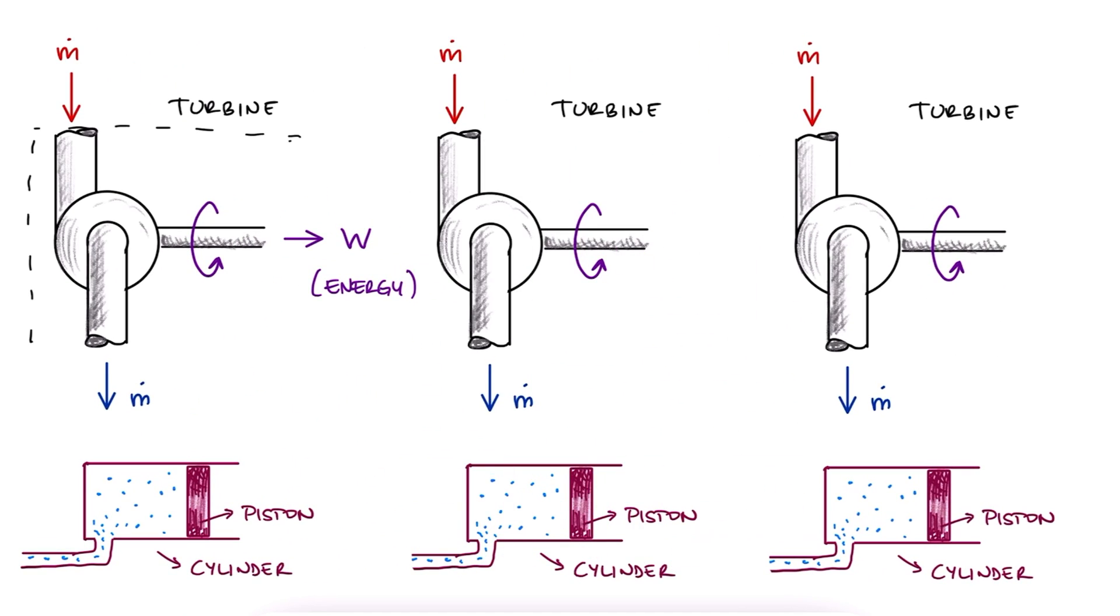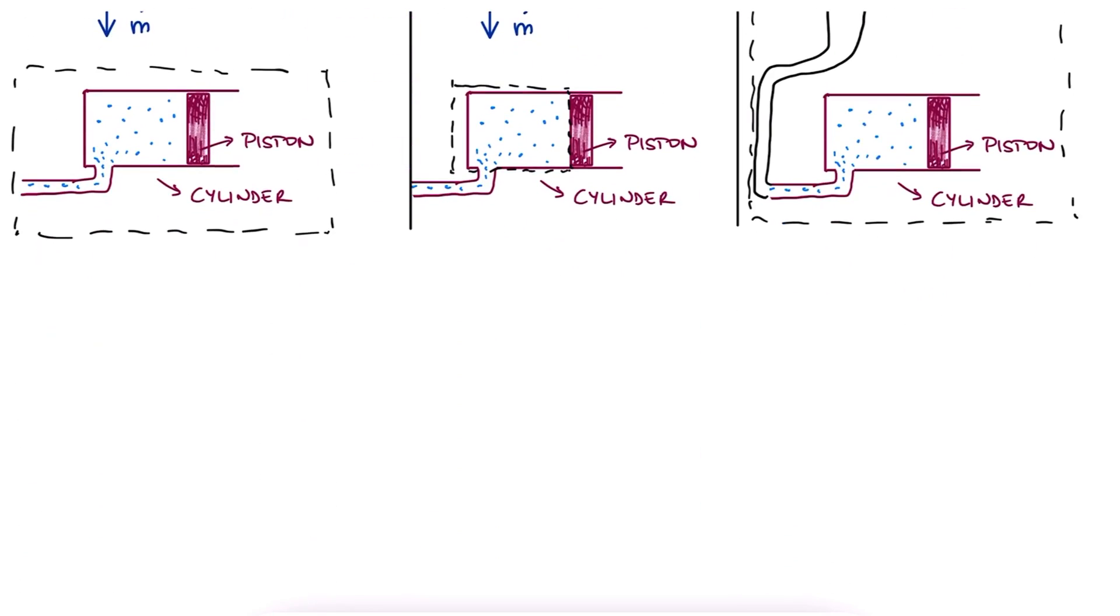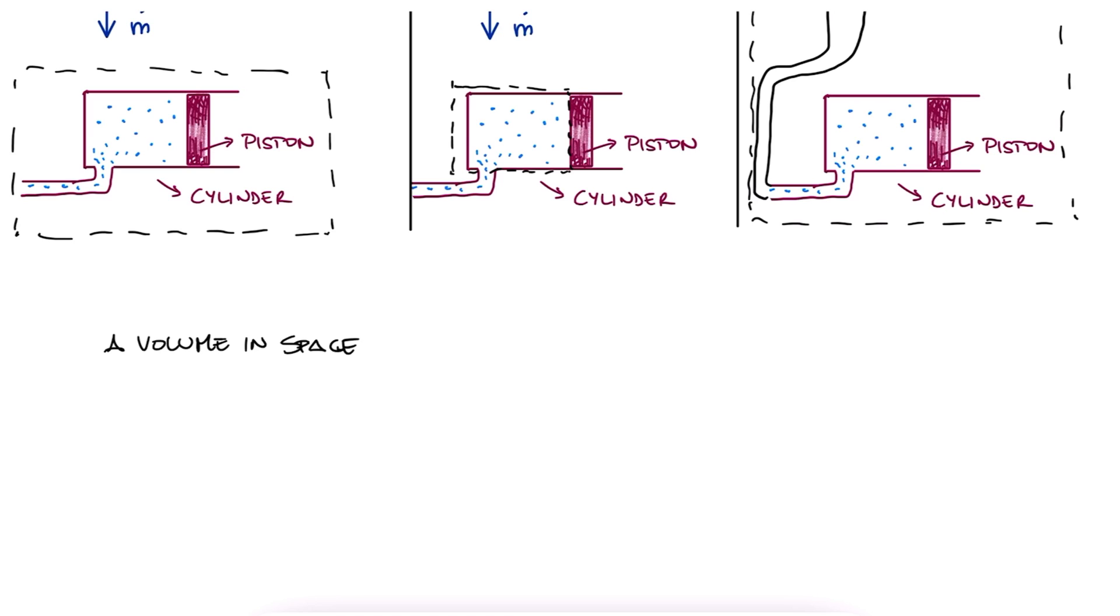For all of these examples, the boundary that we set around them, or for a fraction of them, or for several of them connected to each other, whatever we set as a volume in space that is of interest to us, bounded by well-defined limits, is what we call a control volume.